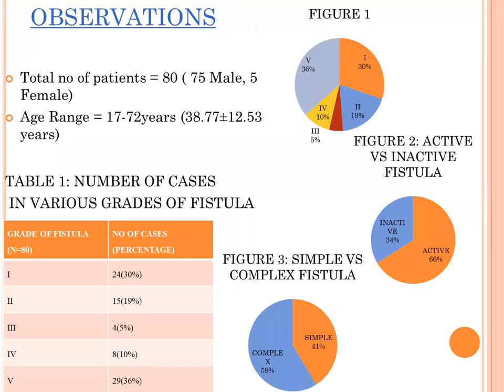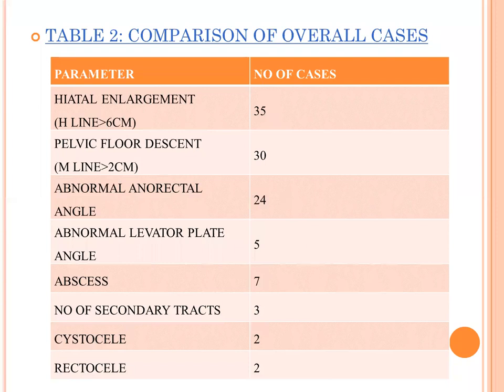The observations of my study show that Grade 1 accounts for 30%, Grade 2 for 19%, Grade 3 for 5%, Grade 4 for 10%, and Grade 5 for 36%. In comparison of overall cases, hiatal enlargement was seen in 35%, pelvic floor descent in 30%, abnormal anorectal angle in 24%, abnormal levator plate angle in 5%, abscess in 7%, secondary tracts in 3%, cystocele in 2%, and rectocele in 2%.